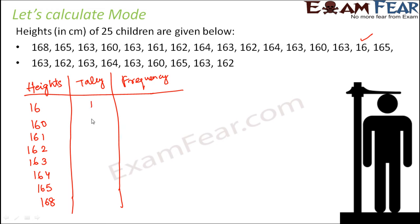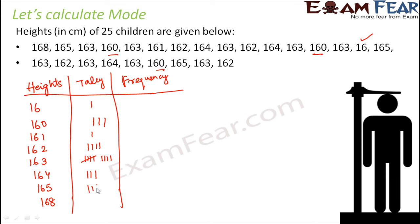Now we count how many times each height occurs. Height 16 occurs once; 160 occurs three times; 161 occurs once; 162 occurs four times; 163 occurs nine times — the tally mark with a scratch represents 5, so the total is 5 plus 6, 7, 8, 9. Then 164 and 165 each occur three times, and 168 occurs once.